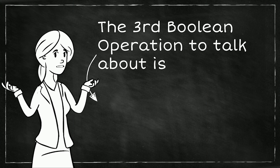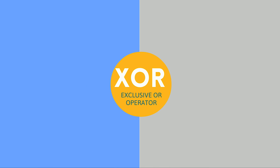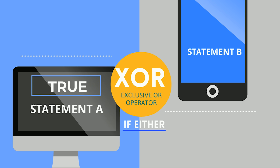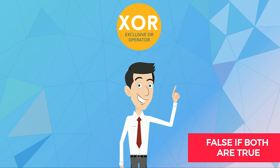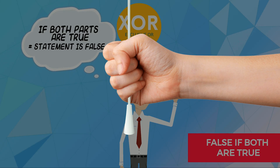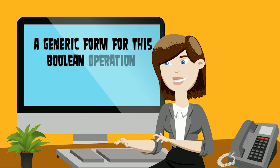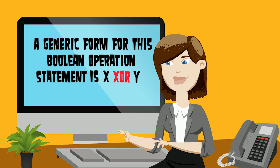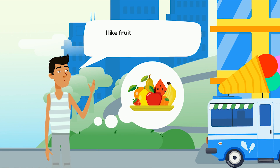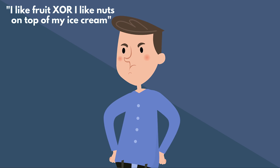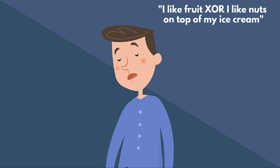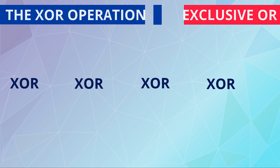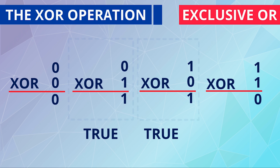The third Boolean operation is XOR or exclusive OR. The exclusive OR operation is used when we want to express that if either of the two parts of the compound OR statement are true, then the whole compound statement is true, but NOT if both parts are true — in that case, the whole compound statement is false. This logical operation is a bit strange in our real spoken languages; however, it is quite common in computer languages. A generic form is X XOR Y. For example, I like fruit exclusive OR I like nuts on top of my ice cream — meaning I do not like both at the same time, and I do not like my ice cream without any fruit or nuts on top. Referring to the figure's exclusive OR operation, notice that two of the results are true and the other two are false.